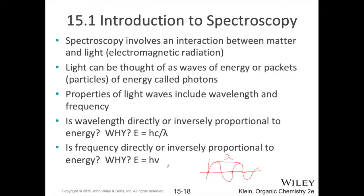If you're drawing the Greek letter nu by hand, it tends to look a bit like a v. In the case of both wavelength and frequency, we can tie those to the energy of the radiation using corresponding formulas. Frequency is directly proportional to energy — they are linked together by Planck's constant, represented with the letter h. Energy is also equal to h times c, which is the speed of light, divided by lambda, which is the wavelength.